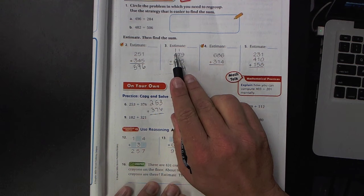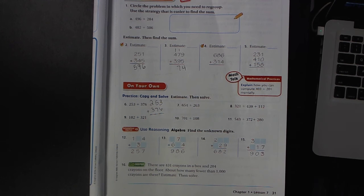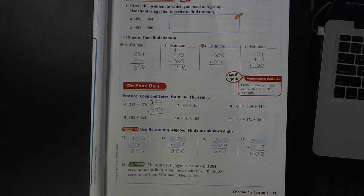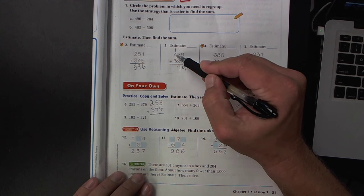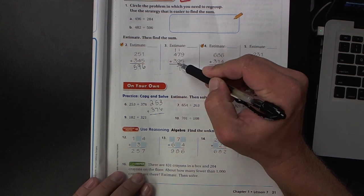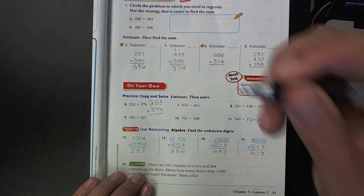Once again, carrying the 1 over to the hundreds place value. Now, in the hundreds place value, 4 plus 1 is 5, plus 3 is 8.